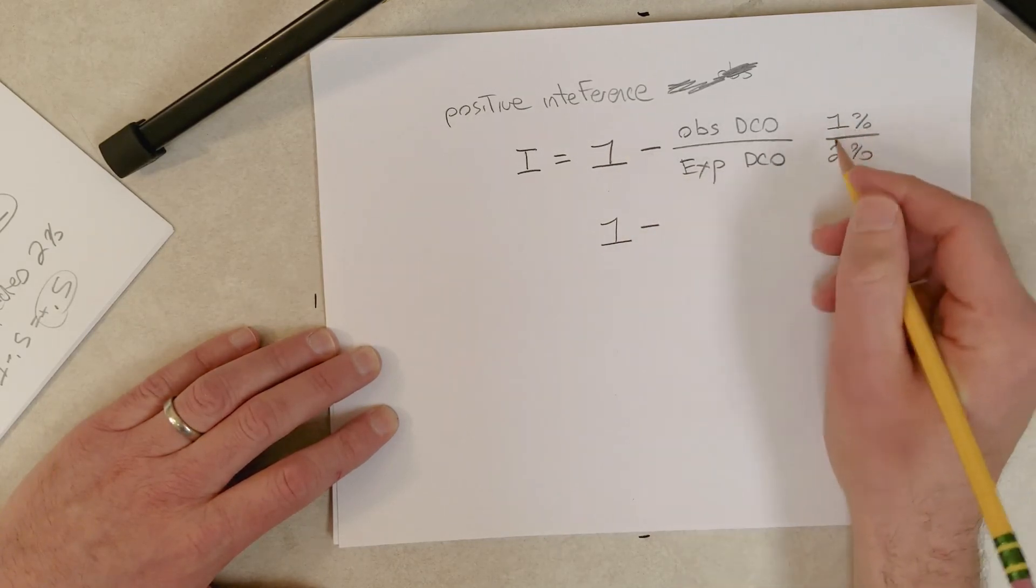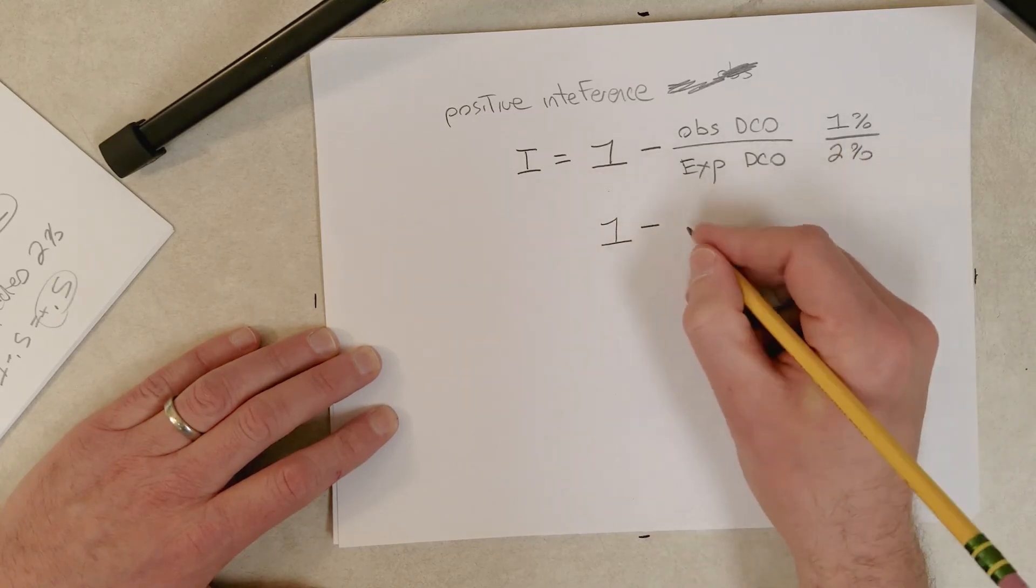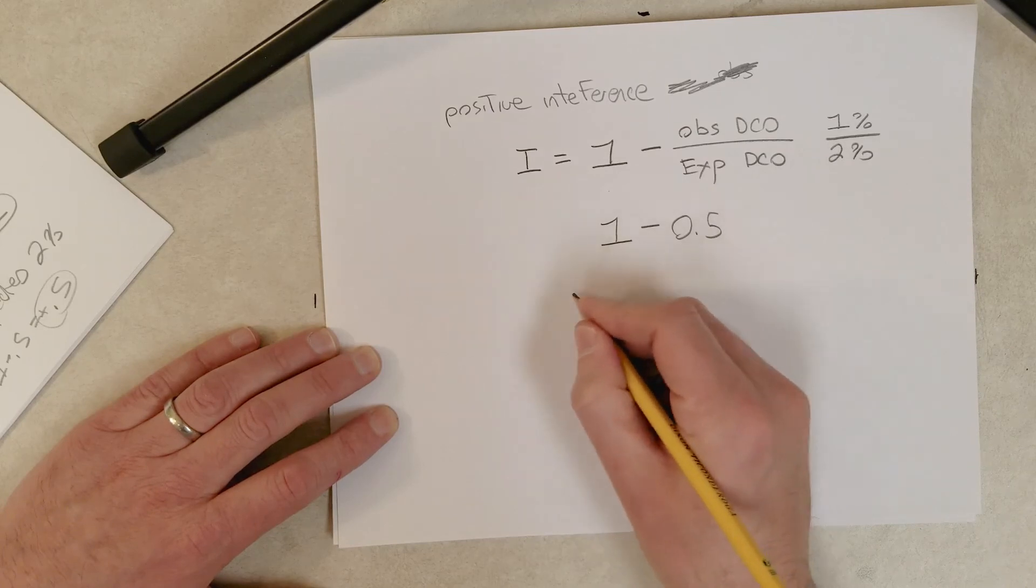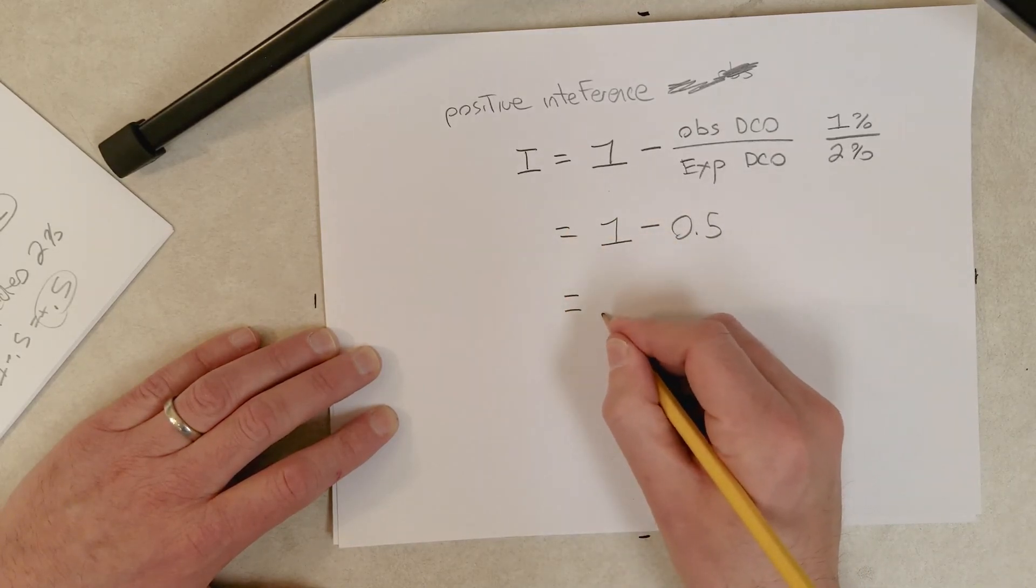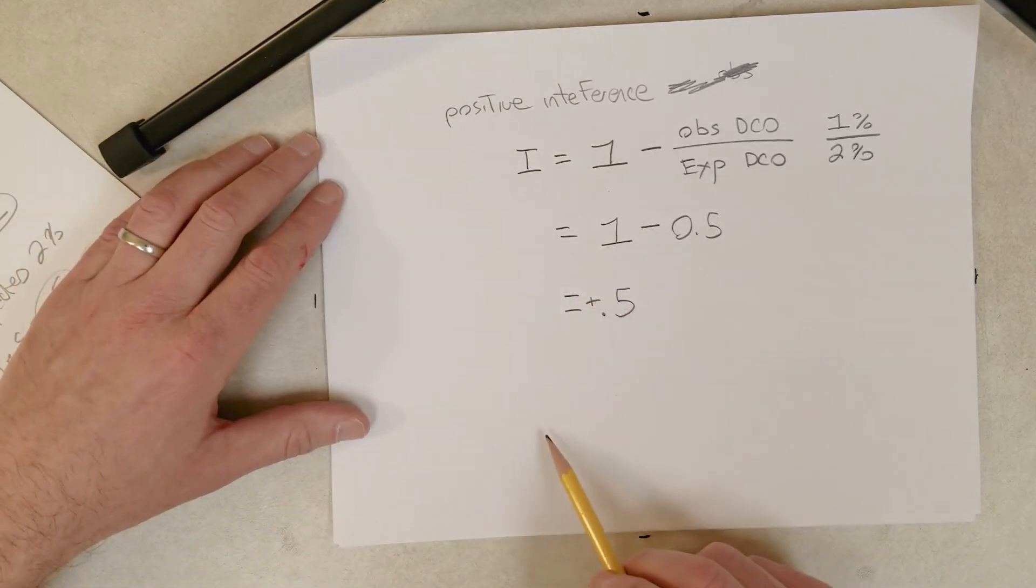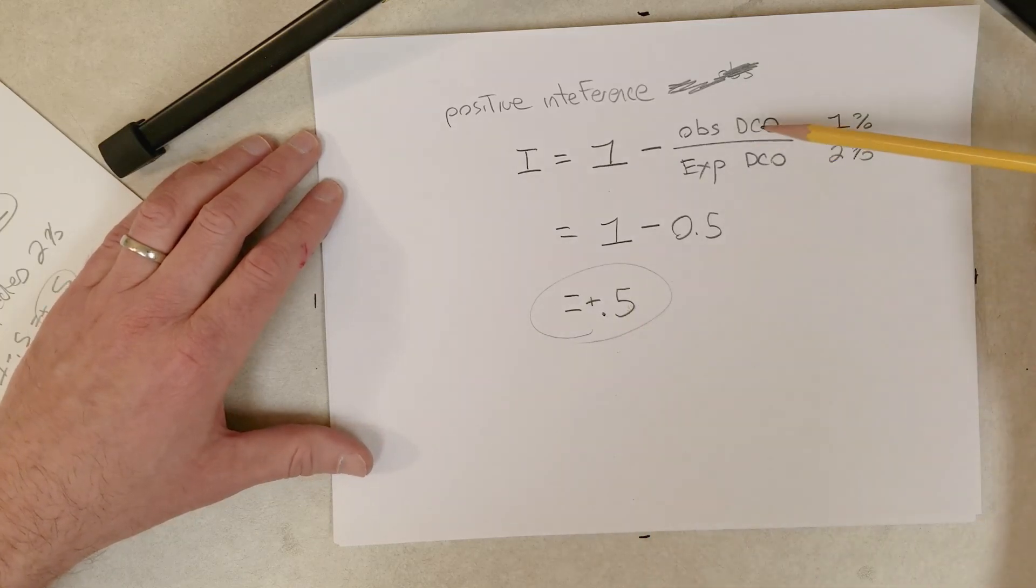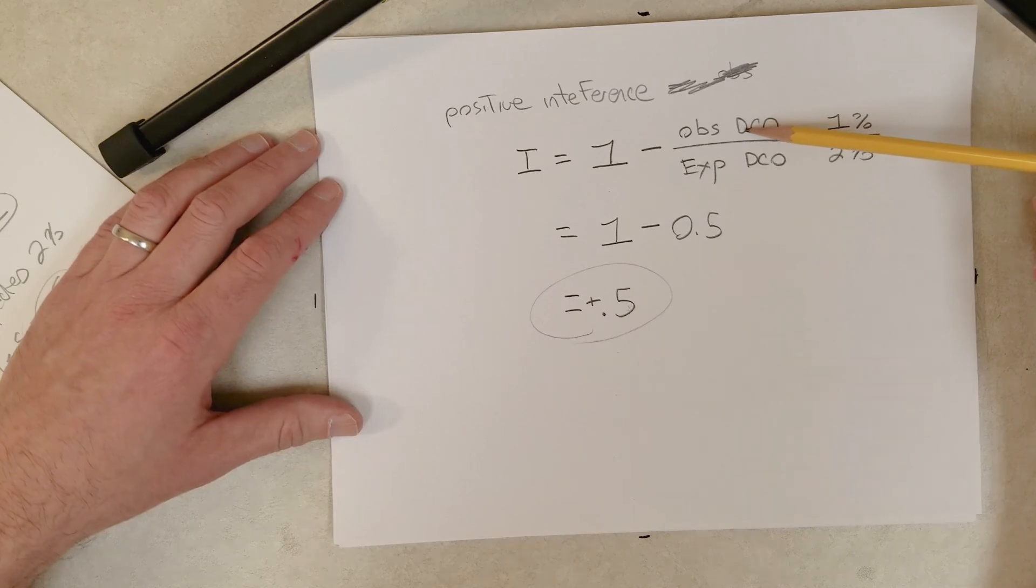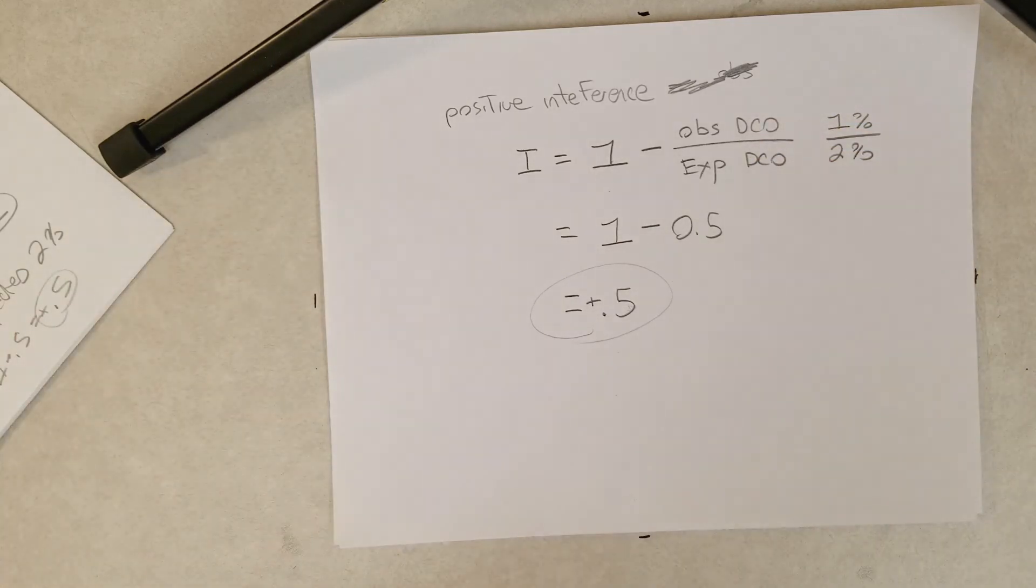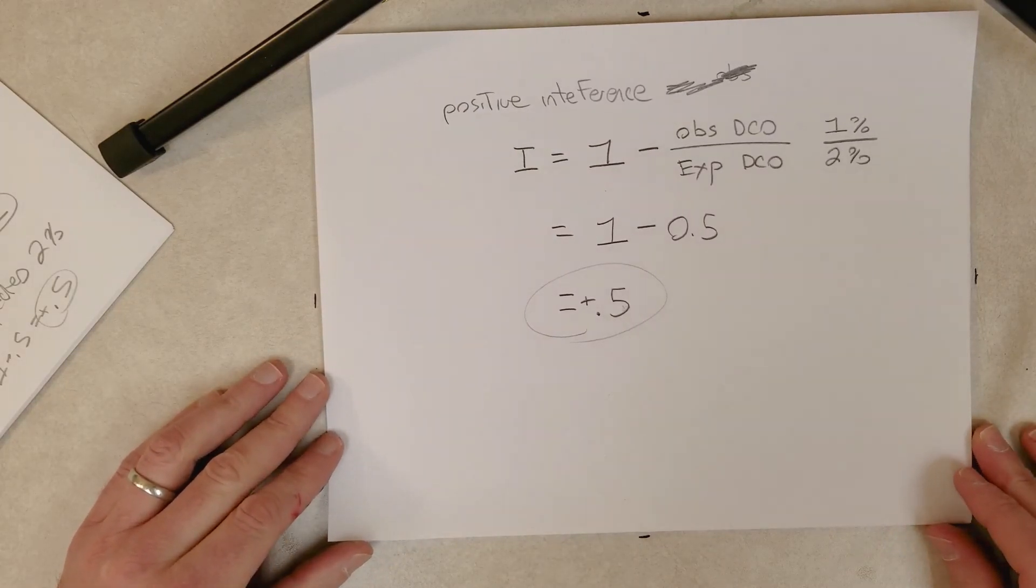This formula says we should have 1 minus 0.5, so interference equals plus 0.5. So positive interference, something seems to be preventing us from seeing the expected number of double crossovers and it's giving us less crossovers than we predicted. That's interference. We may talk a little bit about the mechanisms involved in interference when we get to the molecular part of this course.